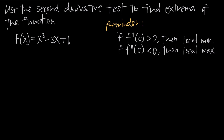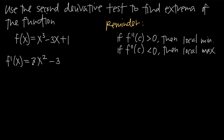Our process is always the same when using the second derivative test. The first thing we do is find the first derivative of f of x. Taking the derivative term by term: the derivative of x cubed is 3x squared, the derivative of negative 3x is negative 3, and the derivative of the constant 1 is 0.